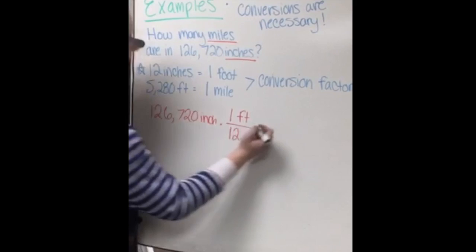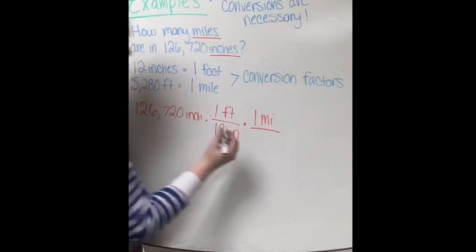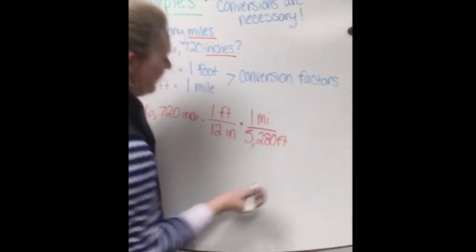We then multiply 1 mile over 5,280 feet. Again, we do this so we can cancel the feet out.